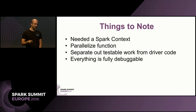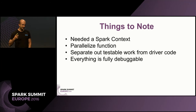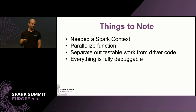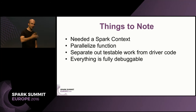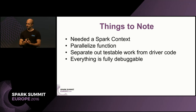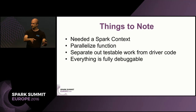Things to note: we needed a Spark context. There's also this idea of parallelization — we need to parallelize our collections. We also need to separate out the code from the driver setup. When you're setting up your Spark context, you need to separate your actual executable code into a separate method. That method could take the Spark context, or it could just take the input RDDs. You want to separate that out because you want to unit test it separately from the code that actually initiates the Spark context. And everything is fully debuggable.